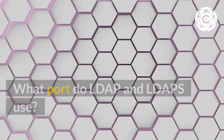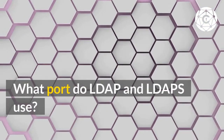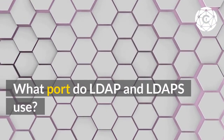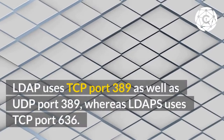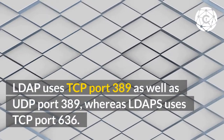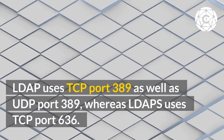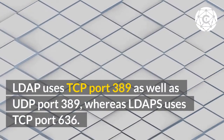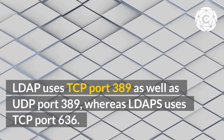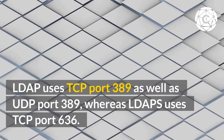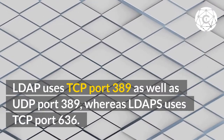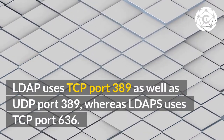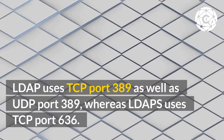What port do LDAP and LDAPs use? LDAP uses TCP port 389 as well as UDP port 389, whereas LDAPs uses TCP port 636.